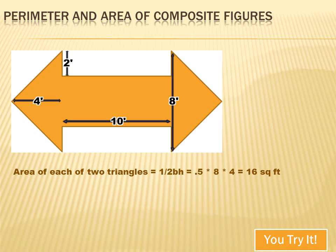Let's start with the two triangles. We know that the base of each of the triangles is 8 feet, and we know that the height is 4 feet. So the area would be 1 half the base times the height, or 1 half times 8 times 4, which equals 16 square feet.